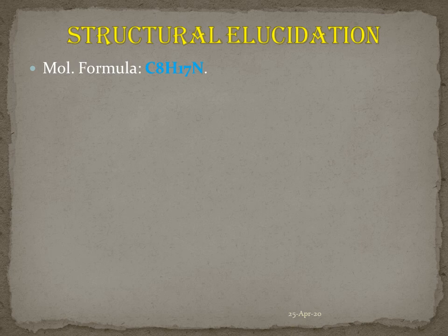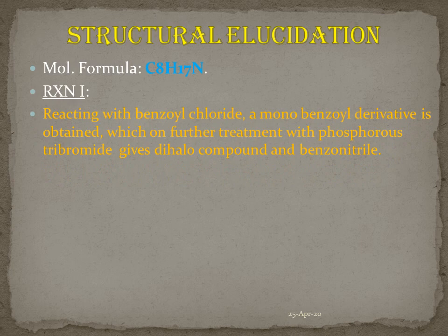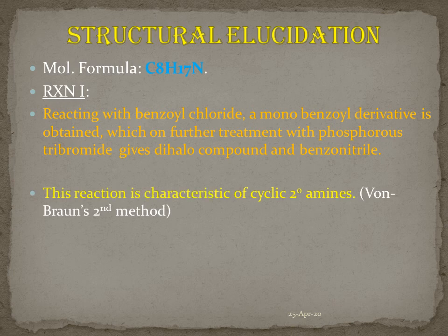In the first reaction, conine is treated with benzoyl chloride and we get a monobenzoyl derivative. On further reaction with phosphorus trihalides — phosphorus tribromide or phosphorus trichloride — this gives a dihalo compound and a benzoyl nitrile derivative. This reaction is a characteristic reaction of cyclic secondary amines. Only cyclic secondary amines give a dihalo compound on reaction with benzoyl chloride and phosphorus tribromide. This reaction is known as Von Braun's second method. Von Braun's reaction has two methods: the first for tertiary amines and this second method especially for cyclic secondary amines.